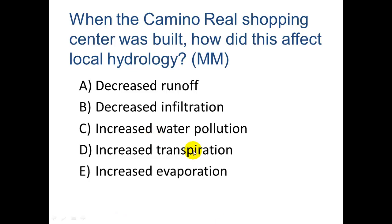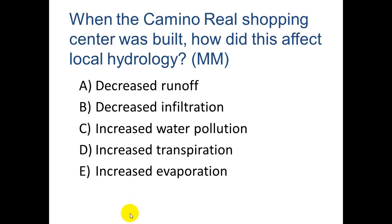We also get increased runoff, so A (decreased runoff) is actually not one of the correct answers. And we get decreased transpiration — D is not correct — because we have fewer trees. When we have fewer trees, it also gets hotter because there's less shade, so we get increased evaporation.